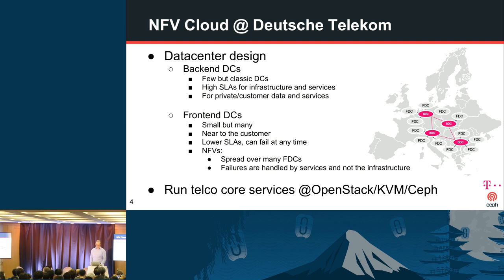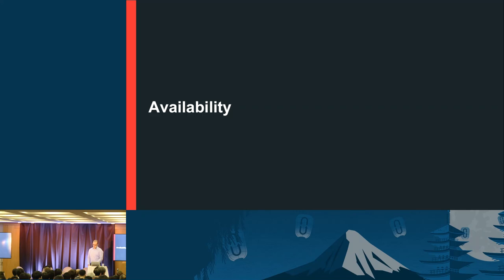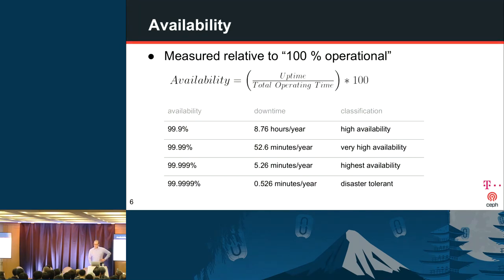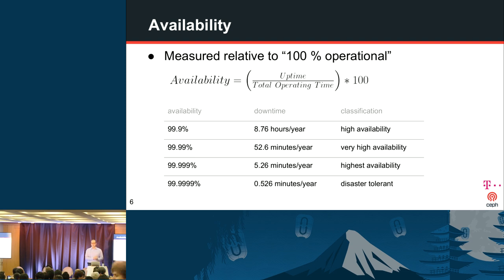Availability is measured relative to 100% of the expected operational time. You all know the 'nines' — from three nines to six nines. What we typically aim for is something between four and five nines. As you can imagine, it would be a real problem if a core service like a phone is failing that often. This talk is mostly about five nines, which corresponds to roughly five minutes of downtime per year — and we'd like to be even better than that.